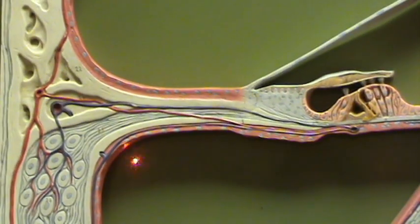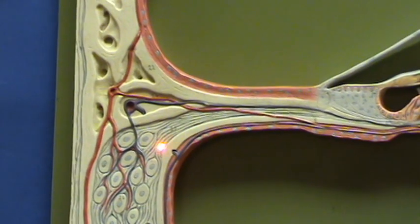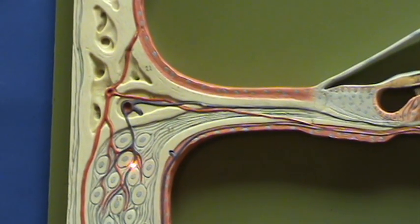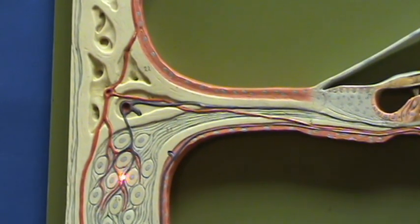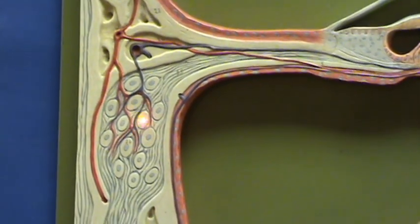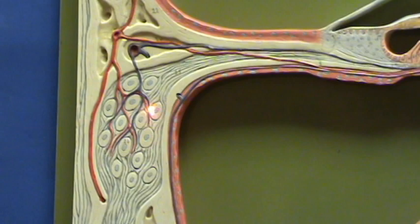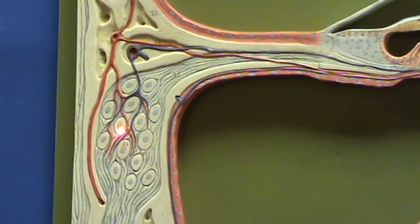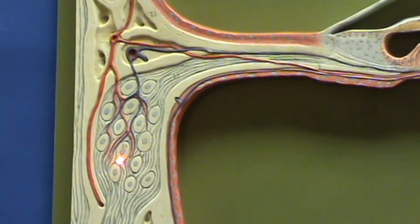And they're going towards the modiolus, and here you can see the cell bodies of these sensory neurons right over here. And you can see how the cell bodies are aggregated in this location to form a ganglion.